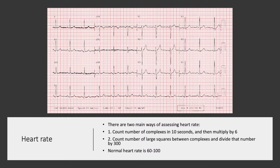The first thing to look at is the heart rate. How fast is this patient's heart rate? Remember that normal heart rate is 60 to 100, and we can use an ECG to identify how fast the heart rate is going.